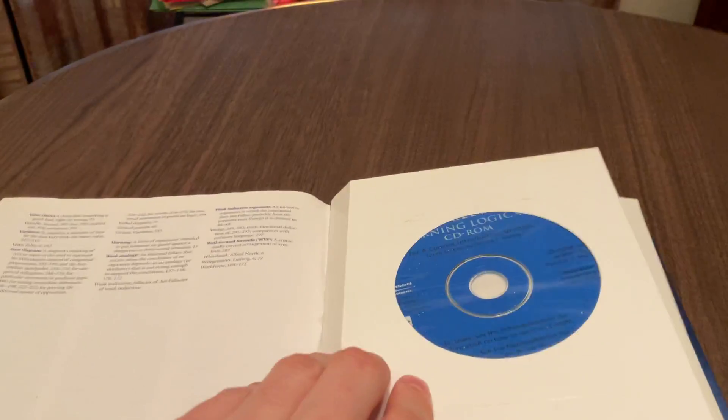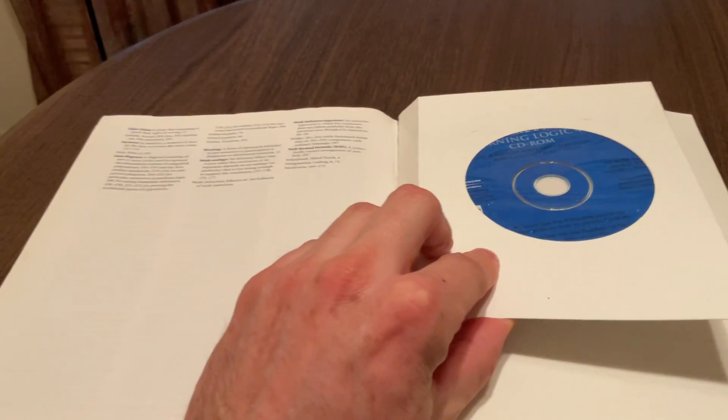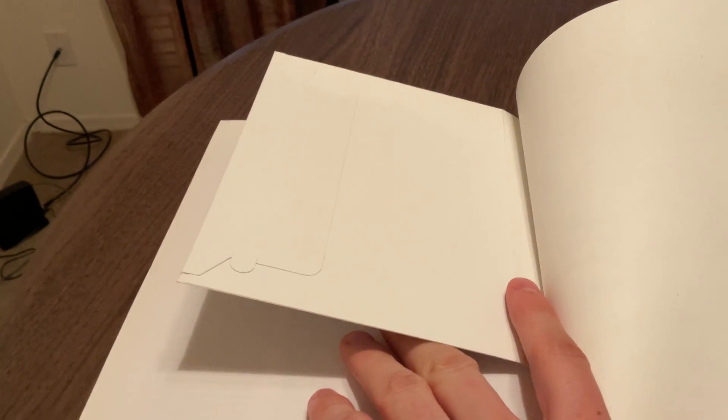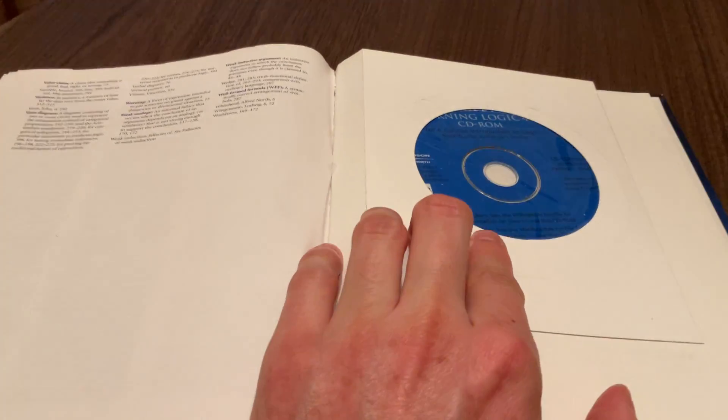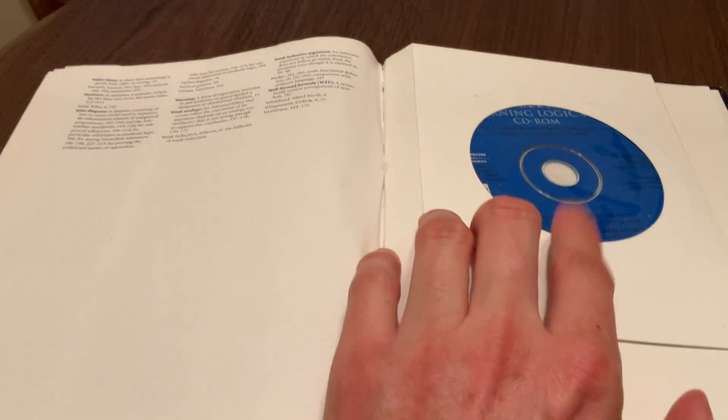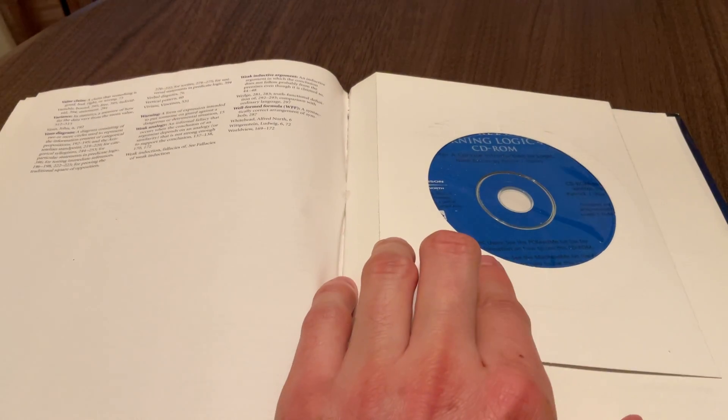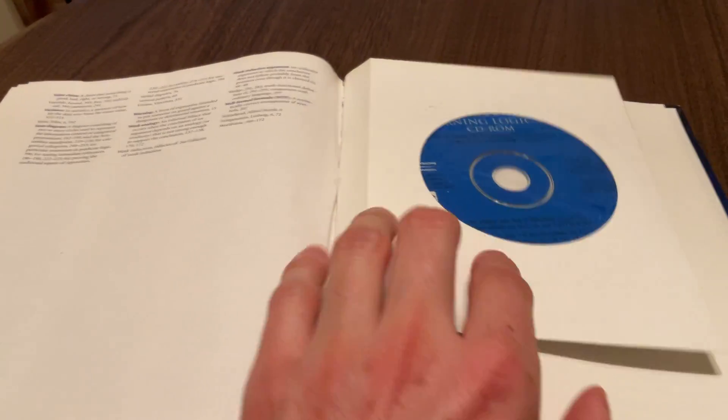I actually have not even opened this up. This apparently came with a CD-ROM, so you can see how old this textbook is. I don't even have a CD-ROM drive that's workable. This hasn't even been opened, but I should probably do that one of these days, just to see what's on here. I suppose there are exercises on there, and maybe an e-text. I'm not sure, but I probably should look into that.